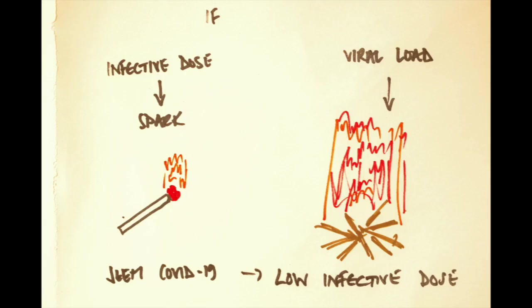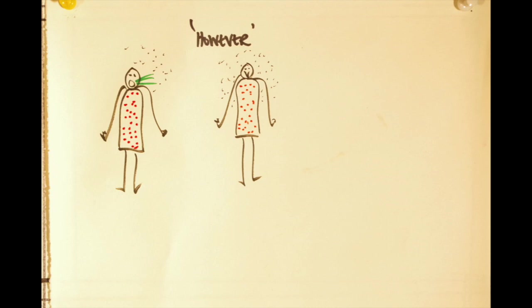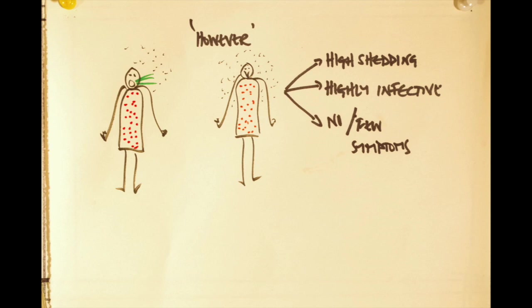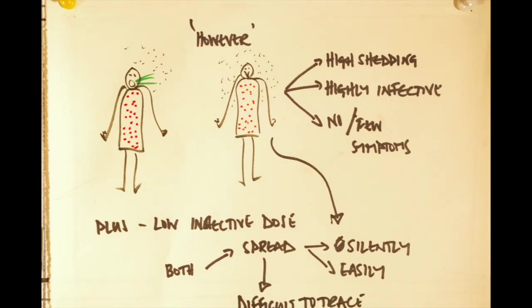It does seem that COVID-19 has a low infective dose and is therefore easier to catch — less spark is needed to light the fire. However, as well as the highly contagious, high viral load, symptomatic sick people, there is also a group of people who are high-shedding and highly infective but with no symptoms. This, combined with the low infective dose, is why the virus spreads so effectively and silently, often without knowing where you caught it from.